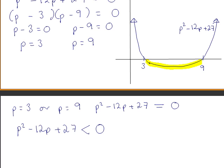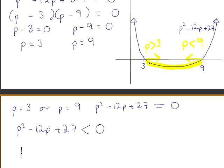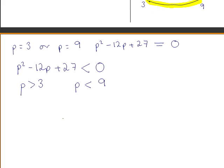We must give the values of p that correspond to this section — that is, where p is greater than 3 and p is less than 9. So if we have a price that is greater than 3 and less than 9, we will make a profit. We can write that as: our price is between 3 and 9.